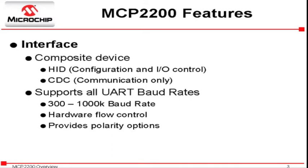The MCP2200 can be configured as either a human interface device or a composite device. The MCP2200 supports all UART baud rates up to 1 megabaud. This device also supports hardware flow control and provides polarity options.